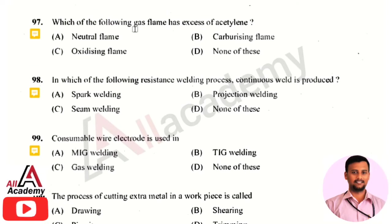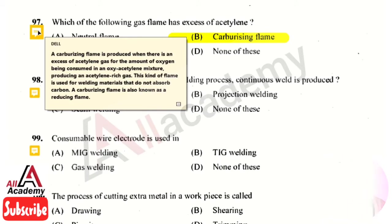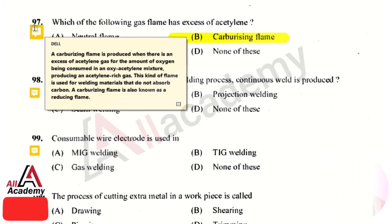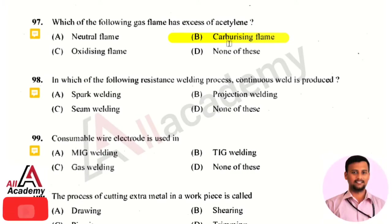The next question: which gas flame has excess of acetylene — the right answer is option 2, that is carburizing flame. A carburizing flame is produced when there is an excess amount of acetylene gas relative to the amount of oxygen being consumed in an oxy-acetylene mixture. If excess acetylene is present in the gas mixture, the flame produced will be a carburizing flame.